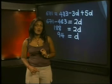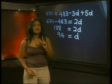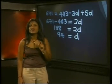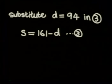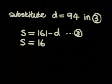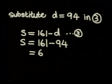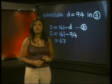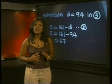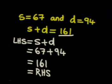So 94 passengers paid for a double trip. Remember, the question asked us how many passengers paid for a single trip. So let's substitute our value for D into equation 3. We get S is equal to 161 minus 94, which simplifies to 67. So 67 passengers paid for a single trip. We still need to check our answer, and we can confirm that our calculations were correct.